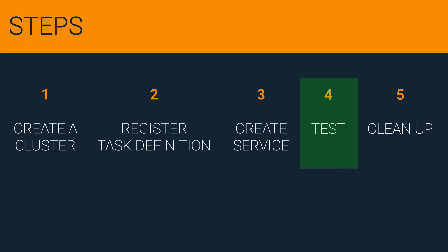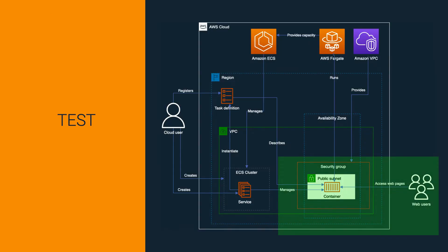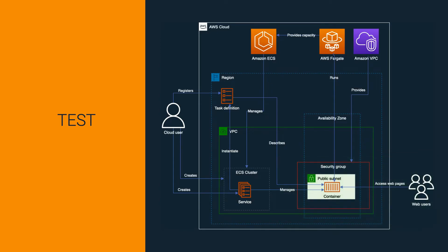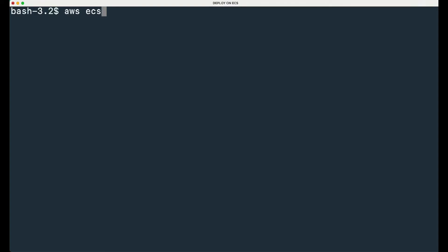Fourth step: Test. In this step, we're going to play the role of web users trying to access our HTTP server. To test the running container, we need to retrieve the public IP assigned to our task. In our example, a task represents a running container. A task has an elastic network interface, which in turn has an elastic IP associated. We need to identify this information by retrieving data from our service. Type and run the following command to list running tasks in your cluster.